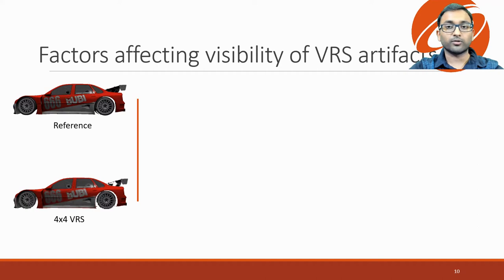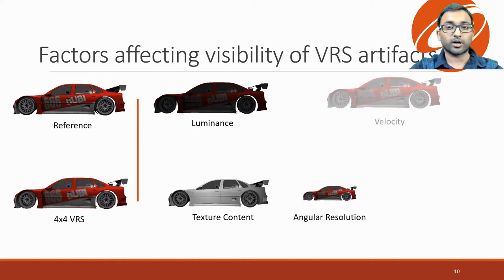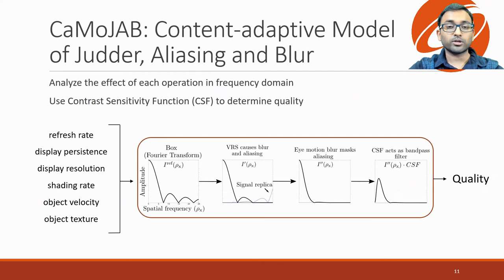Consider a reference image rendered at full resolution and the same image rendered at a 4x4 VRS shading rate. As you can see, the edges of the car are well preserved, but the texture has visible distortions. The visibility of these distortions depends on multiple factors. They will be less visible under dark settings, will change depending on texture content, will be harder to see when the object is far away or when it is under fast motion, and will get worse when the display refresh rate is low. We propose a perceptual model that takes all these content and display parameters and analyzes their effect in frequency domain, then outputs the quality loss caused by low shading rate.